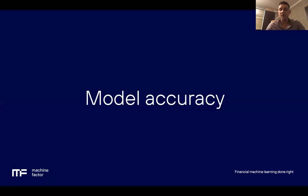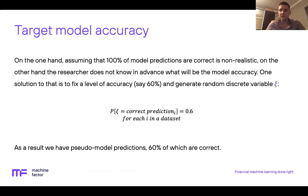The second problem in optimal trading rule detection is model accuracy. Assuming 100% of hypothetical machine learning model predictions are correct is unrealistic, but we don't know the model accuracy in advance. One solution is to fix a level of model accuracy — say 60% — and generate a random discrete variable which takes the value of correct prediction with 60% probability and incorrect prediction otherwise. Under this procedure, we generate pseudo model predictions where 60% are correct and 40% are incorrect, for a binary classification setting.